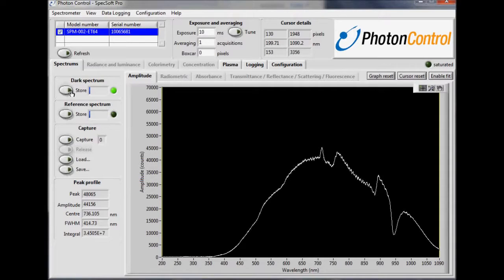As you can see, we get a nice profile from our tungsten halogen SPL2H light source seen earlier in the video. Now let's store our reference spectrum.